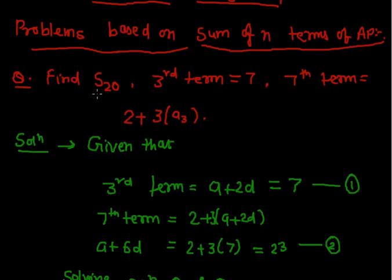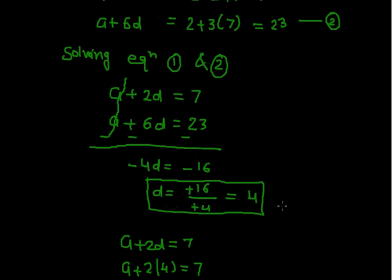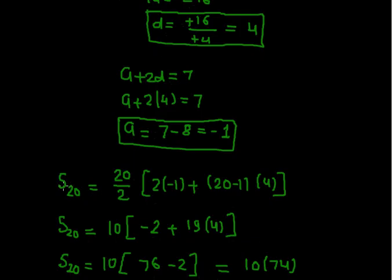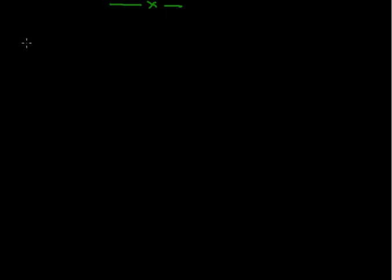Let's summarize: we had to find S20 given that the 3rd term is 7, written as A plus 2D, and the 7th term is given in terms of the 3rd term. Marking these as equations 1 and 2 and solving, we got D equals 4 and A equals minus 1. Applying the sum formula for S20 gave us 740. This is a general type of problem asked in exams.